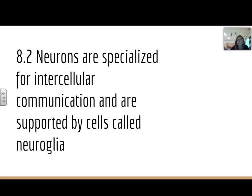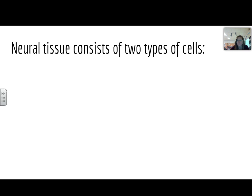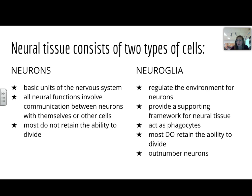Now, A2 is going to break down the specialized intracellular communications and the support cells within the nervous system. Those support cells of the neurons themselves are called neuroglia, also known as glial cells. Neural tissue consists of two types. Neurons are the basic unit — all neural functions involve communication between neurons with themselves or other cells, and most neurons do not retain the ability to divide. Neuroglia regulate the environment for the neurons and support the framework for the neural tissue, connecting as phagocytes to keep the neural tissue healthy.